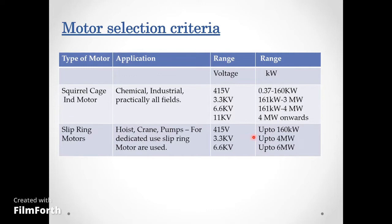For applications like hoists, cranes, and pumps, slip ring motors are used. The ranges are: up to 160kW at 415V, and above that 3.3kV and 6.6kV can be used.